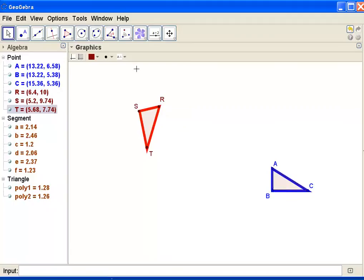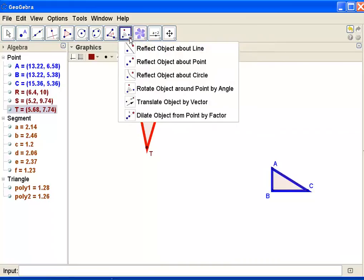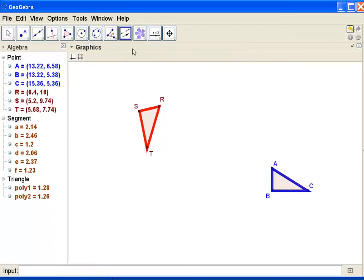So let's find the translation tool. The translation tool in GeoGebra is right here. Translate an object by a vector. And the first thing you do is click your object, then the vector.